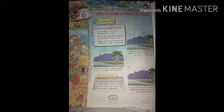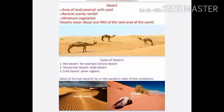In this chapter, we are going to learn about the physical features of Saudi Arabia, the climate, wildlife and the vegetation of Saudi Arabia, and also the economic activities and the life of people living in Saudi Arabia. As Saudi Arabia is 95% desert, let us first understand the meaning of desert.